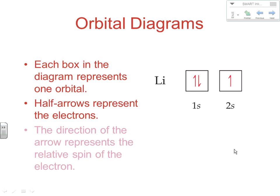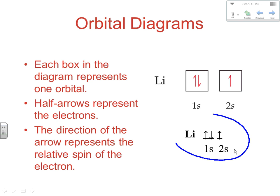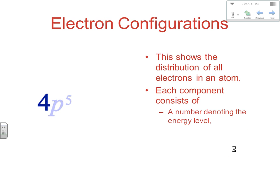Each box in a diagram represents an orbital; arrows represent electrons. The direction of the arrow represents the relative spin. For lithium with 3 electrons, you've got 2 electrons in the 1s and 1 electron in the 2s, with up and down arrows showing spin. This is what we call an orbital diagram — it shows every electron and really all four quantum numbers: energy level, sub-level, orientation, and spin.